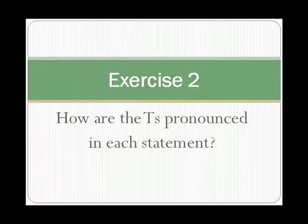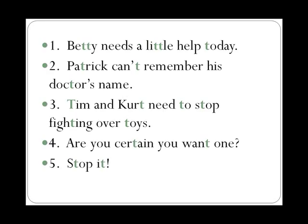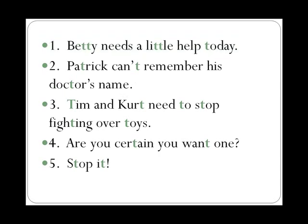Exercise 2. How are the T's pronounced in each statement? In the example statement, we see two T's highlighted in green. The first is a final T before a consonant sound, so we can use a glottal stop. The second is a T at the beginning of a word, so it's a true T. The statement is: 'What can Tom do?' Statement 1: Betty needs a little help today. That's a flap T, flap T, and true T.